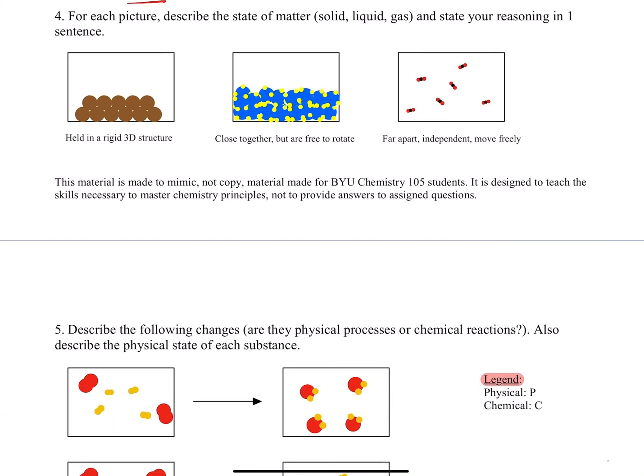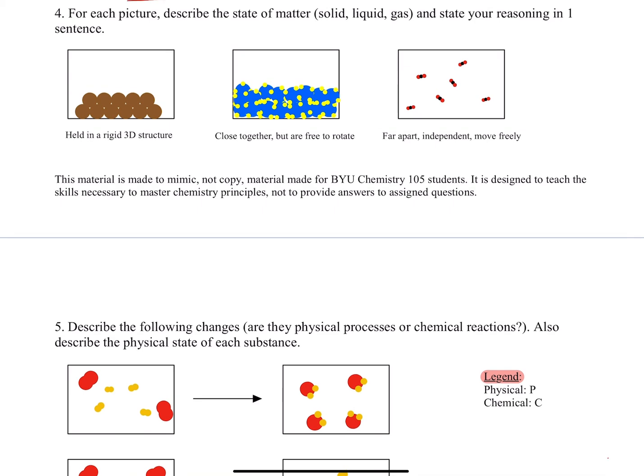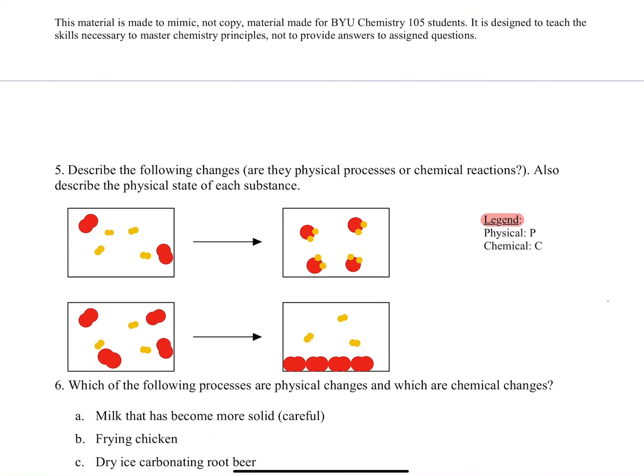We kind of talked about this in number two, but we'll just review this for a little bit. For each picture, describe the state of matter and state your reasoning. Solids, this is the key stuff here - held in a rigid 3D structure, and it does not conform to the size of its container. Close together but are free to rotate - that's characteristic of a liquid. Notice that they're close together. They're not free roaming. They're not flying out, but they are close together. So we'll call that a liquid. And then lastly here, we're going to classify this as gas because they're far apart. They move pretty freely independent of one another.